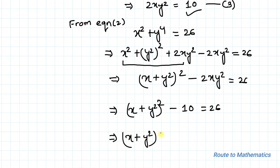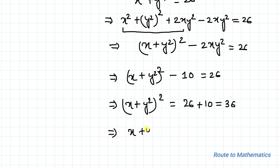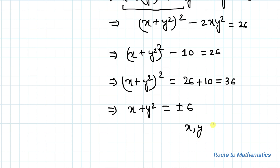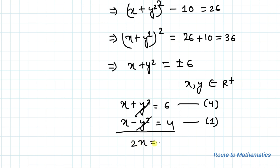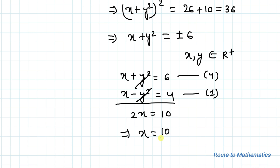This implies (x + y²)² equals 26 plus 10, which equals 36. So x + y² equals plus or minus 6. Since x and y are positive real numbers, x + y² equals minus 6 is discarded, giving us x + y² equals 6 as equation 4. Adding equation 1 (x minus y² equals 4) and equation 4, the y² terms cancel, giving 2x equals 10, so x equals 5.